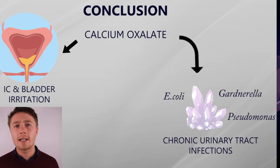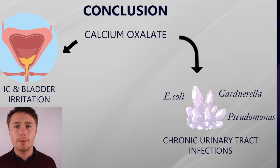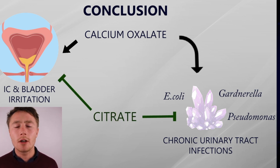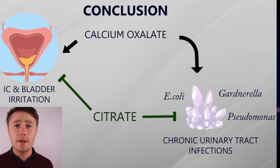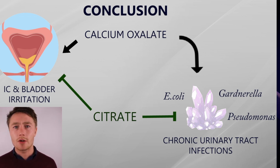Furthermore, oxalate can also act as houses for bacteria — somewhere to adhere to and essentially proliferate from. The use of urinary alkalisers has been shown to have great benefit in urinary tract infections, and part of this may actually be due to their ability to dissolve calcium oxalate crystals.